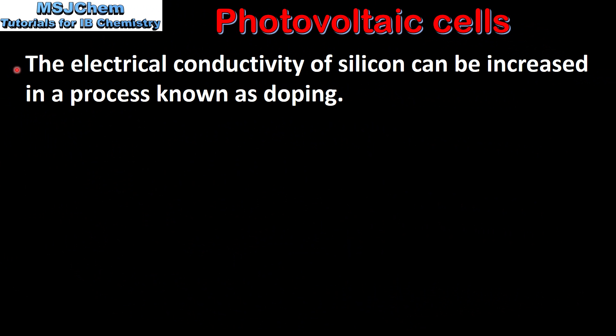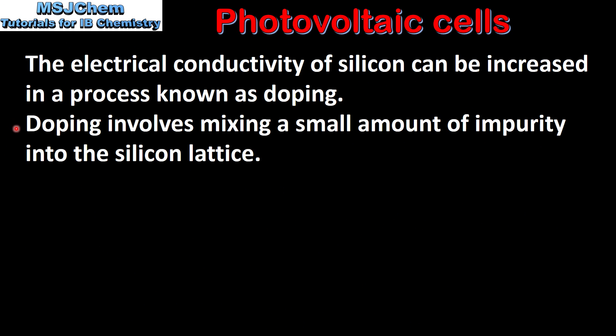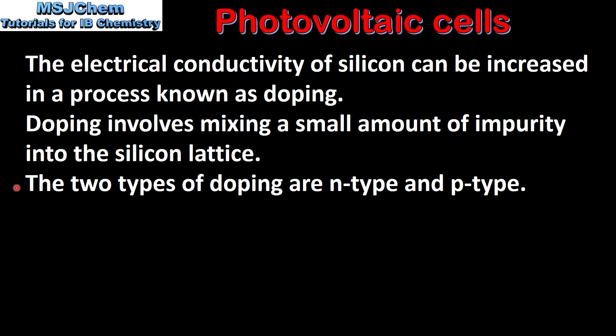The electrical conductivity of silicon can be increased in a process known as doping. Doping involves mixing a small amount of impurity into the silicon lattice. The two types of doping are N-type and P-type.